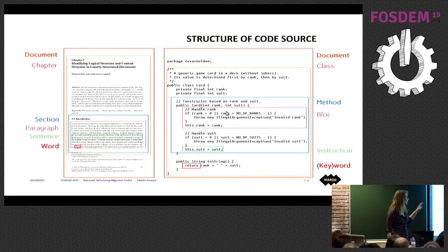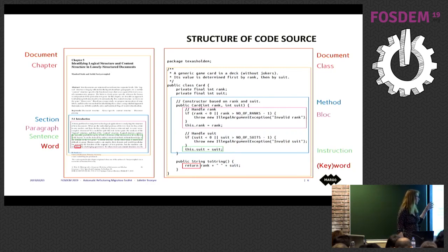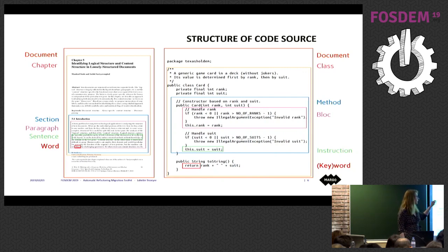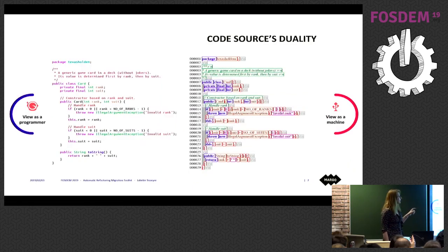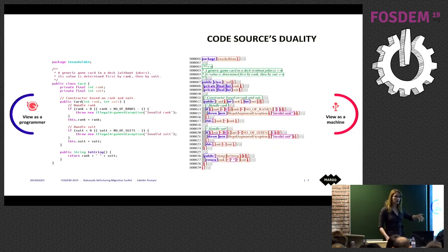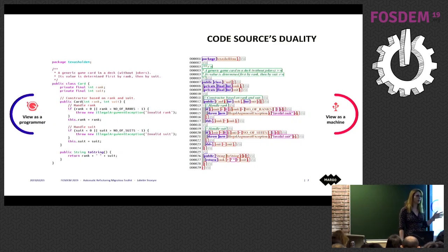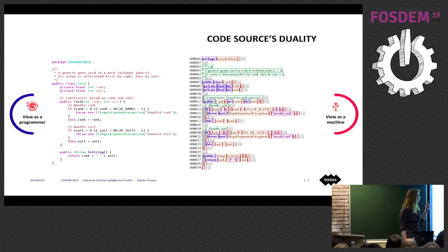Code has data. When you see code, you can relate it to text — you have a structure with blocks and pieces. The main difference between code and text is you have strong relationships between the entities. What I find most interesting is the duality: code can be seen as a programmer — it's text, you read it and understand its purpose, like here a poker game — and also as a machine, where you just execute instructions without caring about the goal.